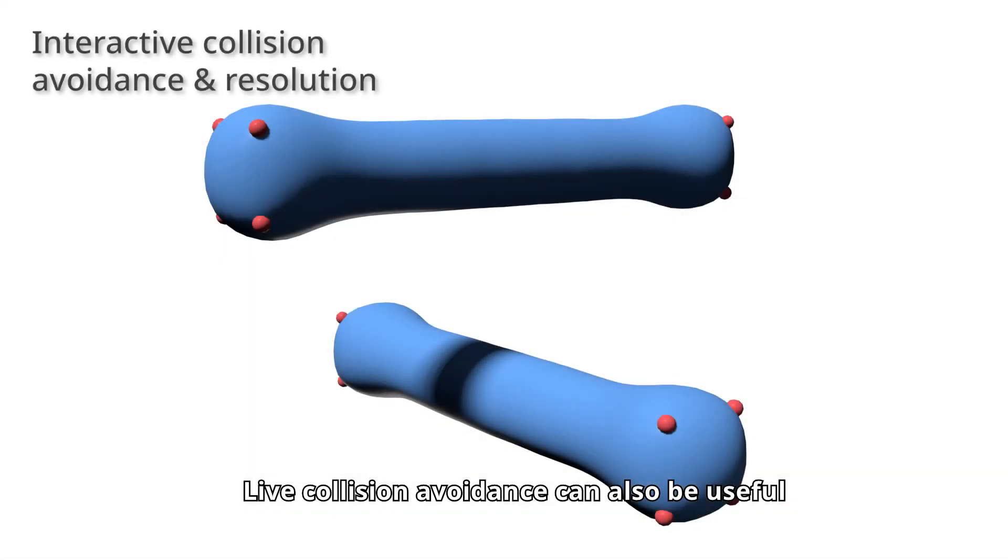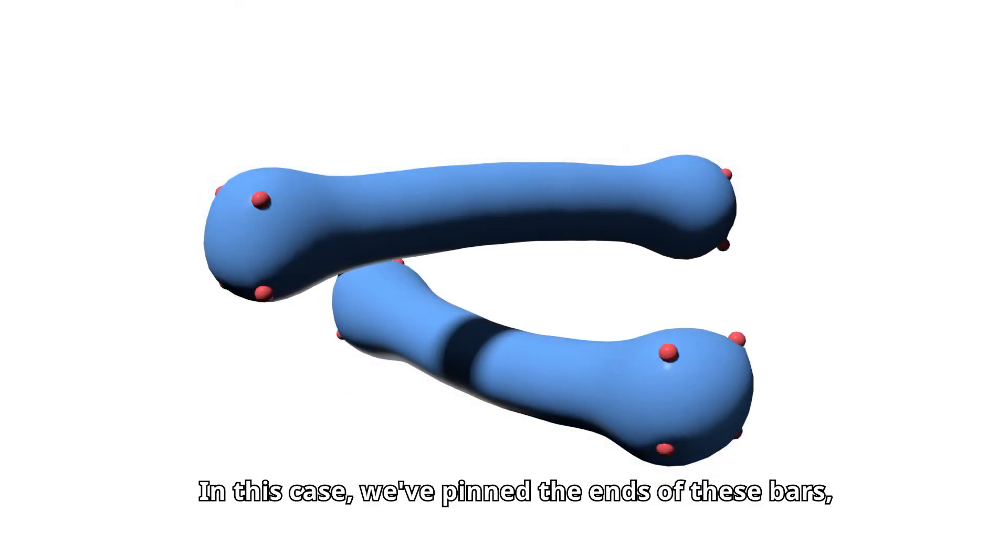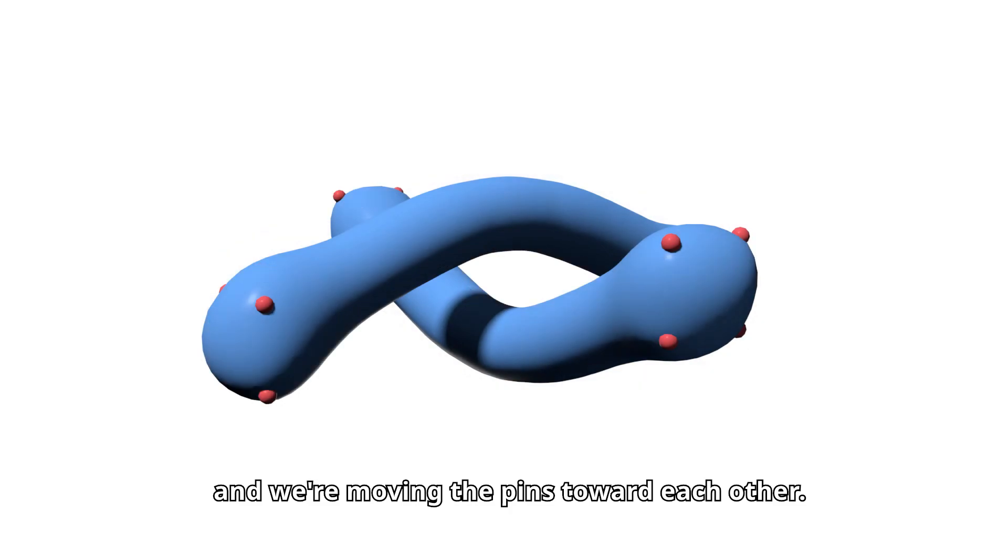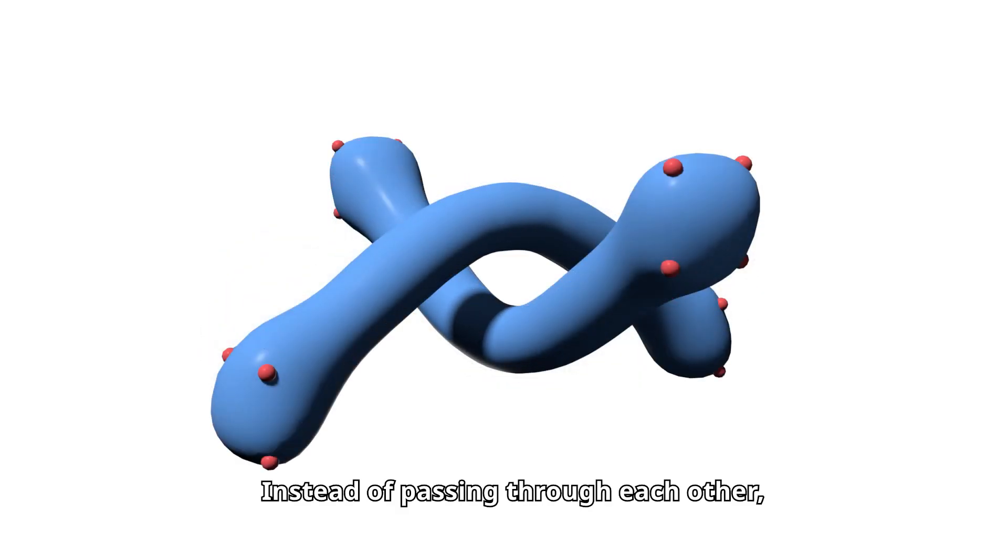Live collision avoidance can also be useful for interactive modeling. In this case, we've pinned the ends of these bars, and removing the pins toward each other.